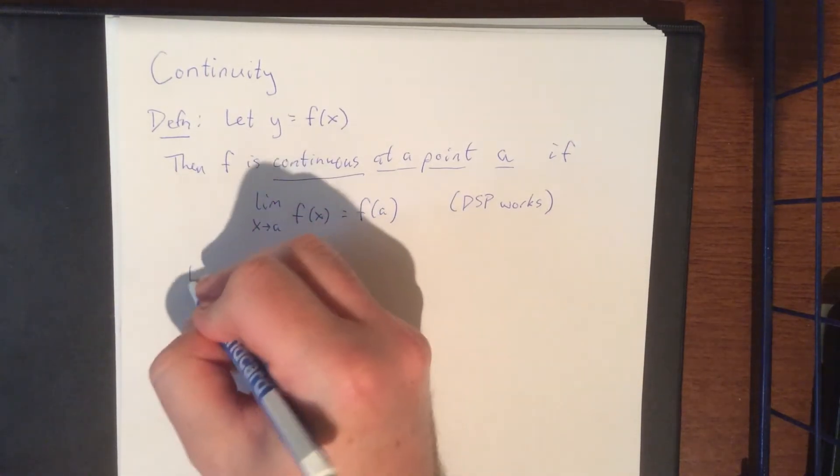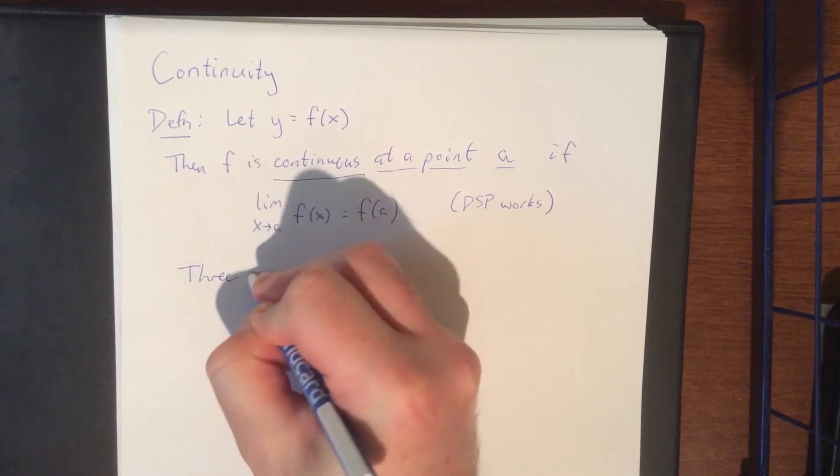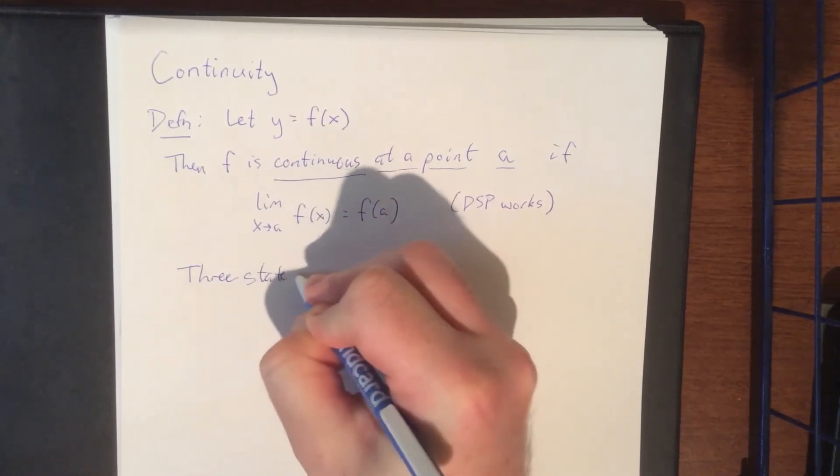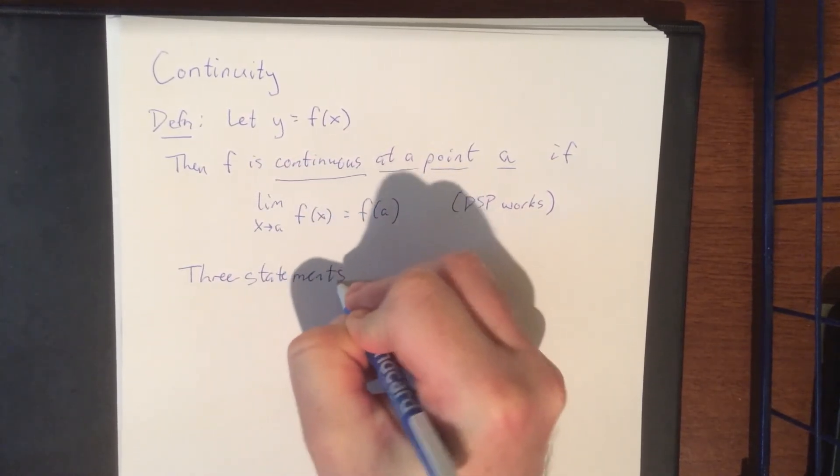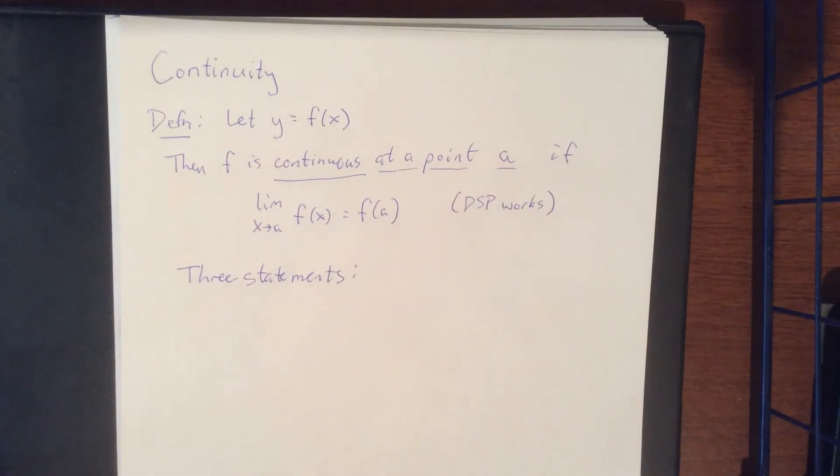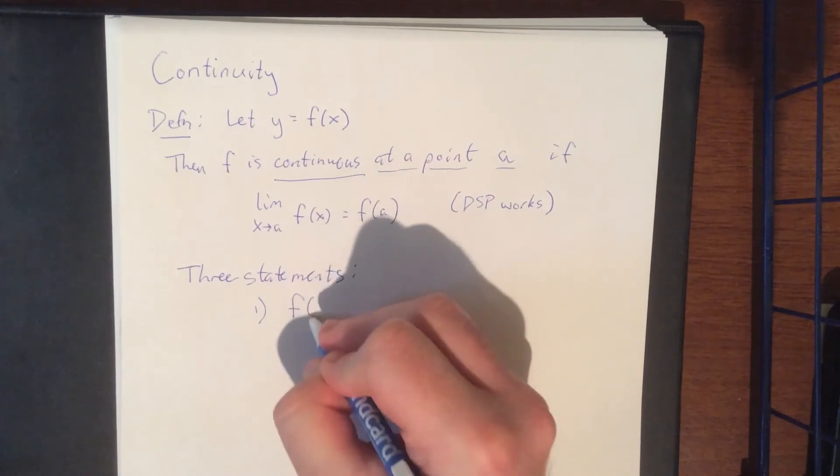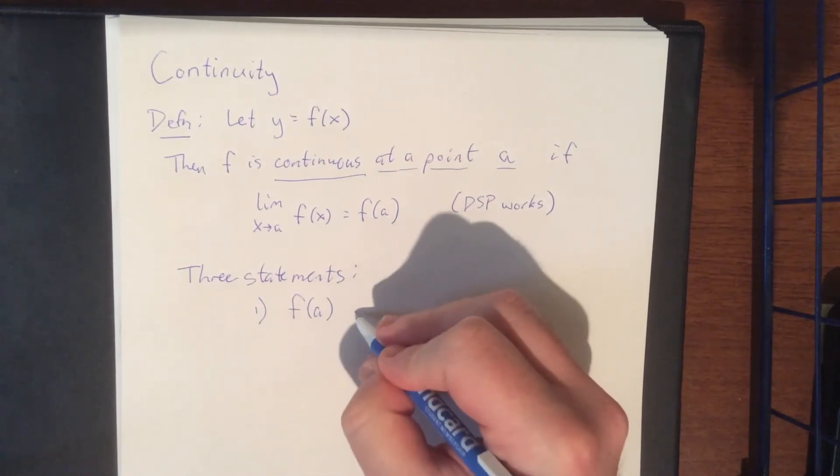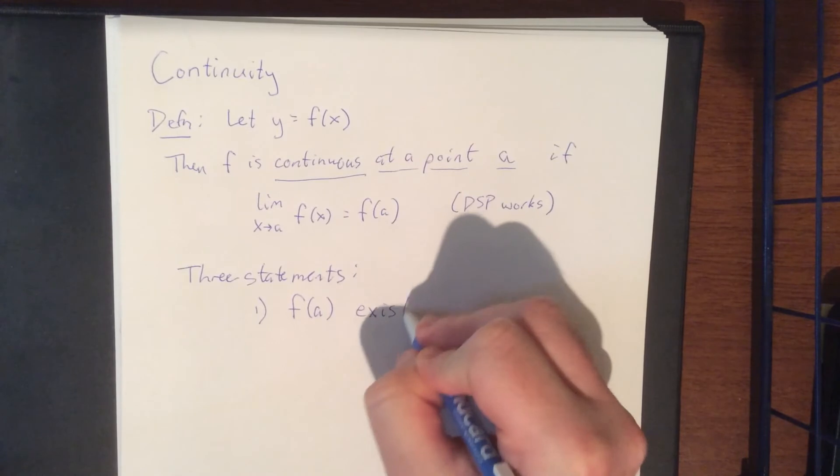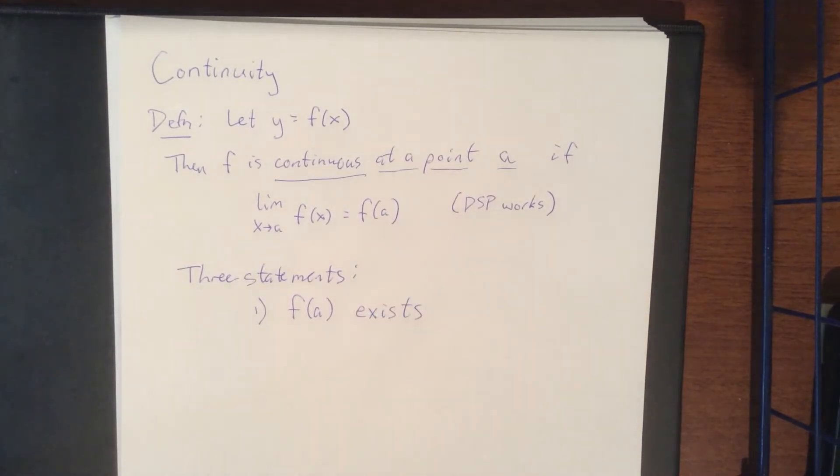So what we have here is really three statements. Those three statements are, first off, that the function is actually defined at that point. So what we're saying is that f of a actually exists.